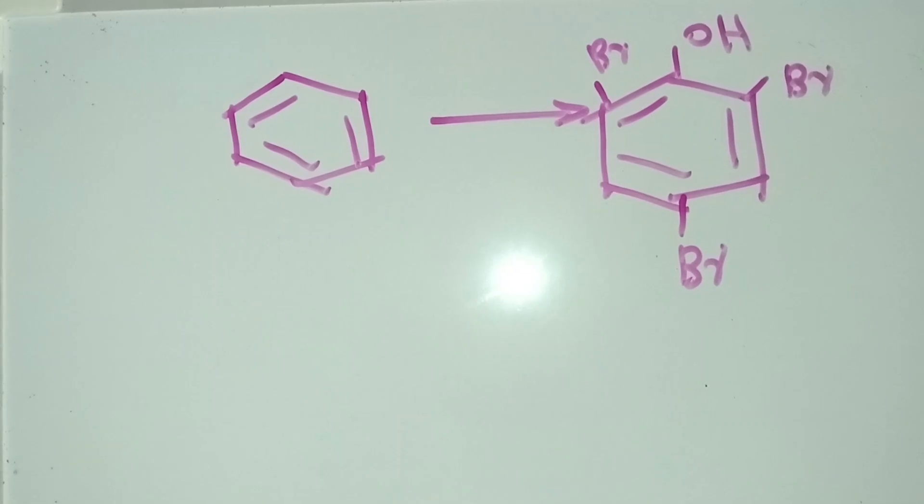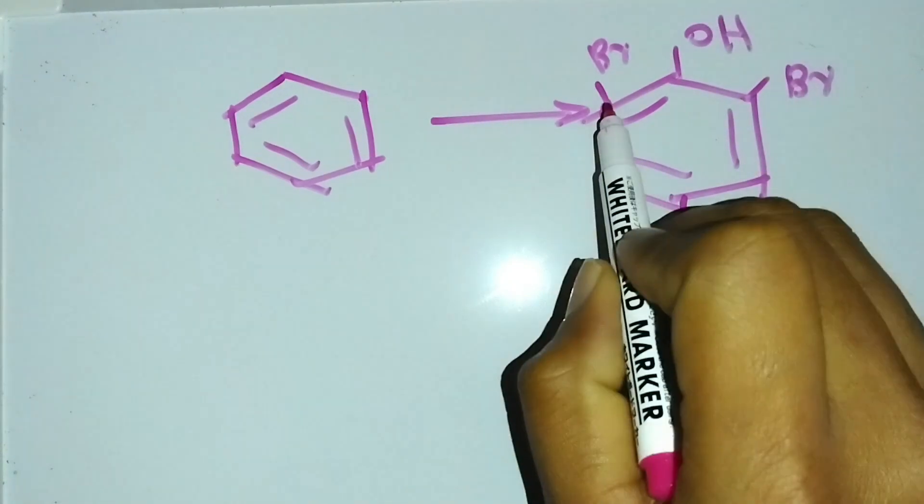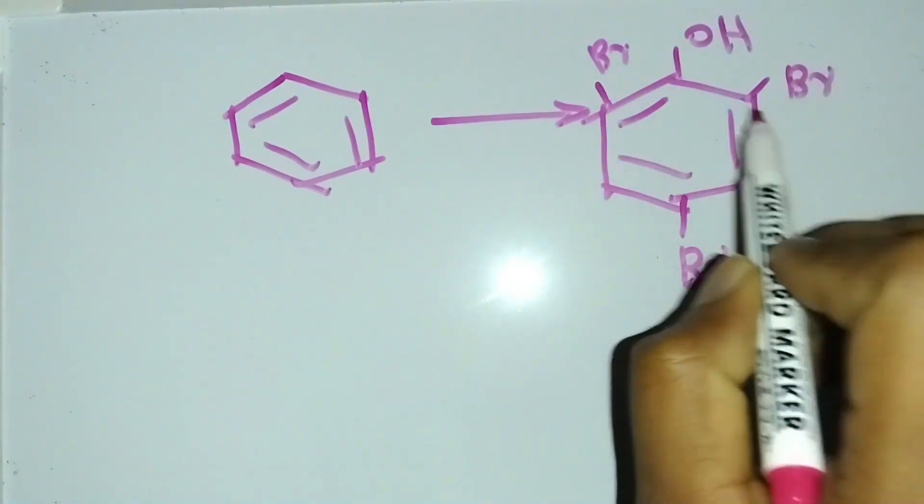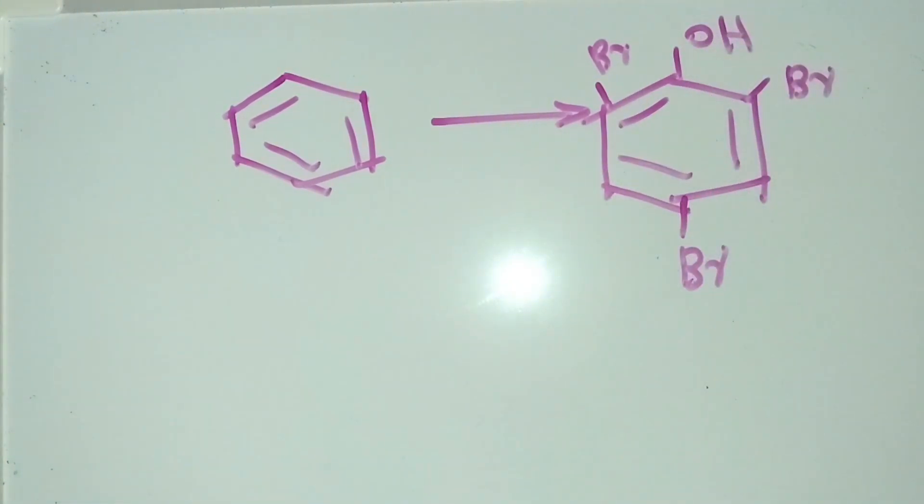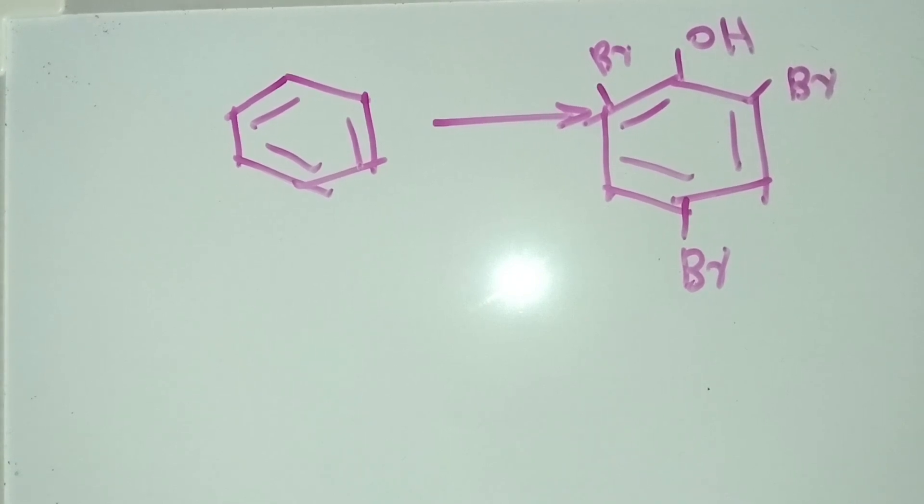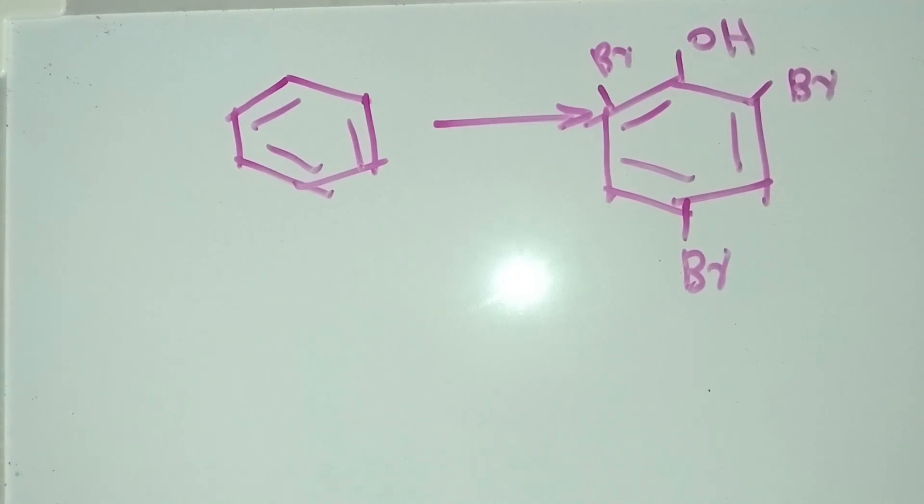We already have benzene and we have to convert benzene into 2,4,6-tribromophenol. For this organic synthesis, we have to initially make phenol. For making phenol, I have to make aniline before making phenol.